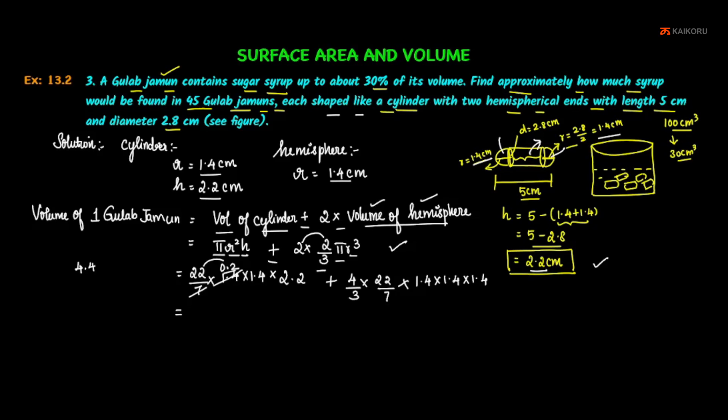22 multiplied by 1.4 into 2.2. Working through the multiplication: 1.4 into 2.2 equals 3.08. Then 4 into 1.4 gives us the calculations.